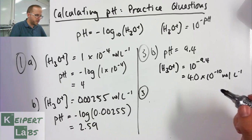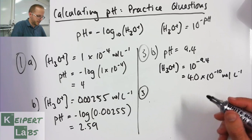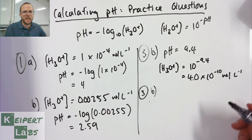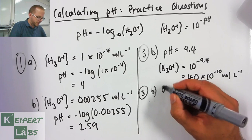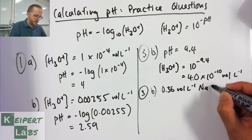Now I'm going to do another bit of a skipping exercise and I'm going down to question five part B. We're asked to calculate the pH of a solution of sodium hydroxide, 0.36 mole per liter sodium hydroxide NaOH.